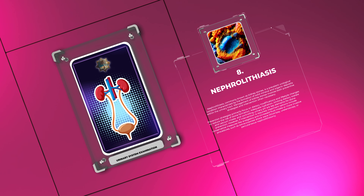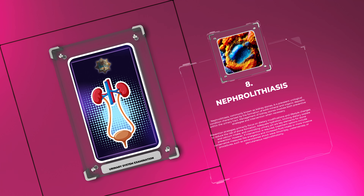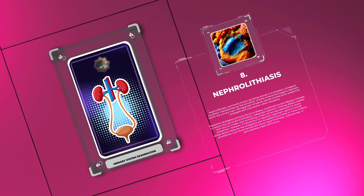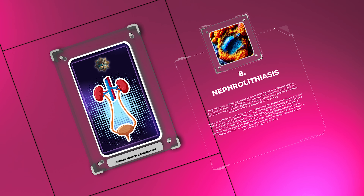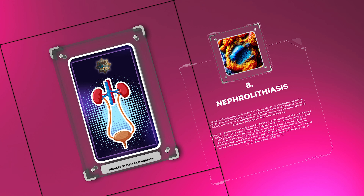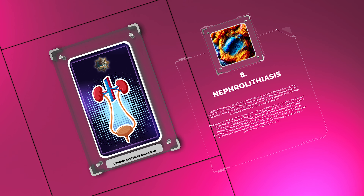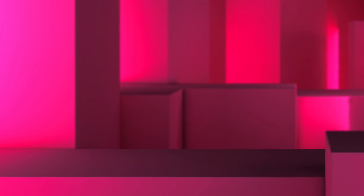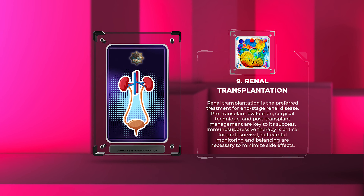Nephrolithiasis, commonly known as kidney stones, is a prevalent urological condition characterized by the formation of solid mineral and organic deposits within the urinary tract. Prevention strategies primarily focus on dietary modifications and lifestyle changes, including adequate hydration, limiting dietary oxalate and calcium intake, and controlling urinary pH. If intervention is required, treatment options include conservative measures like analgesics and increased fluid intake, or more invasive procedures such as extracorporeal shock wave lithotripsy, ureteroscopy, or percutaneous nephrolithotomy.